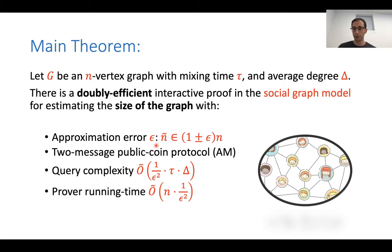And the result says that there is a doubly efficient interactive proof in the social graph model for estimating the size of the graph. And it has the following properties. First, we have some approximation error epsilon. So you can just plug whatever epsilon you want. This is the error that you allow. And we're going to verify that the claimed size, so the prover is going to claim that the graph is of size N tilde, and we're going to verify that N tilde is very close to N. So at most a one plus epsilon and at least one minus epsilon times N. The protocol is two message and it's public coin, which is great. The query complexity of the verifier, maybe the most important parameter here is small. So it's one over epsilon squared times this mixing time tau and times delta. And it seems that this is inherent, but not completely clear. And it's also doubly efficient. So the prover running time is also efficient. It's N times one over epsilon squared, which means that for a constant epsilon, this is quasi linear.